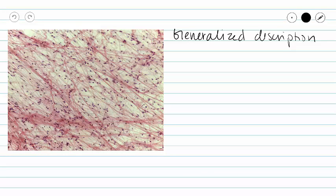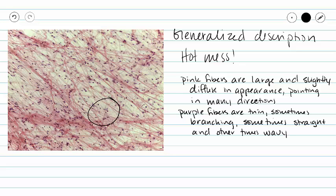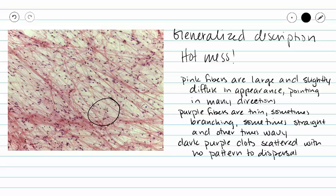When I think of areolar tissue, I think of a hot mess. Look at this tissue — there is stuff going on all over the place and it doesn't seem like there's any organization to it. It just looks like someone took pink and purple and threw it at a white slide. But if we take a closer look, we can see pink fibers that are straight and pointed in all different directions, and much thinner purple fibers that are sometimes straight and sometimes a little squiggly. We have dark purple dots all over the place and a lot of white space.